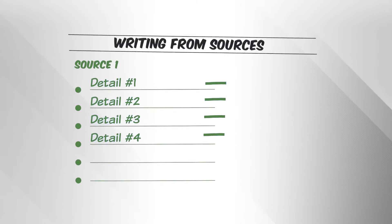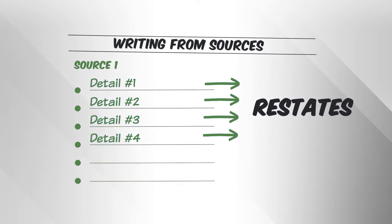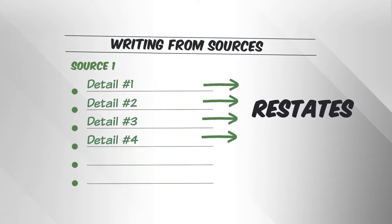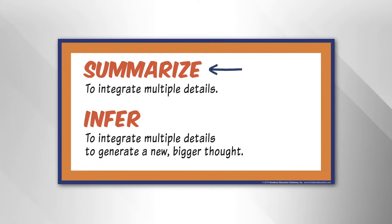When a reader collects details from a text and then restates those details, he is restating or retelling. If the reader repeats the ideas of the author, he's not thinking beyond the text — he's simply summarizing the text.